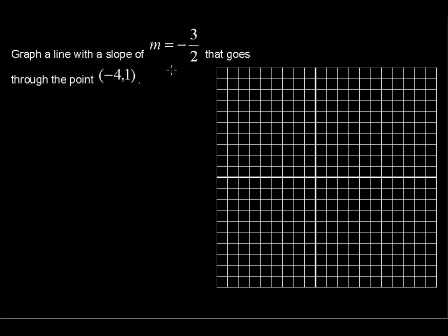Graph a line with a slope of m equals negative 3 over 2 that goes through the point negative 4, 1. Okay, we have the two things that we need to graph a line. We have a point that it goes through and the slope of the line.